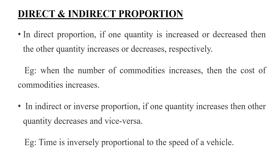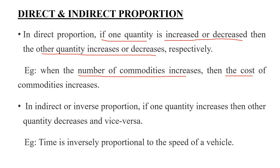Next, we will go to direct and indirect proportion. First, we will go to direct proportion. If one quantity is increased or decreased, then the other quantity increases or decreases respectively. For example, when the number of commodities increases, then the cost of commodities increases.